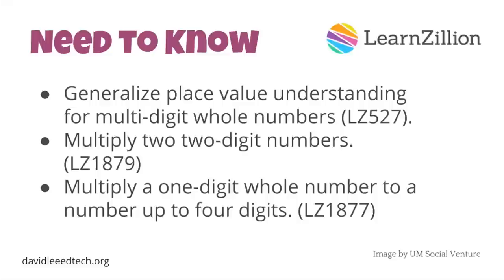The need-to-know component consisted of the following: knowing place values for multi-digit whole numbers, multiplying two two-digit numbers, and multiplying one-digit whole numbers to numbers that have up to four digits.